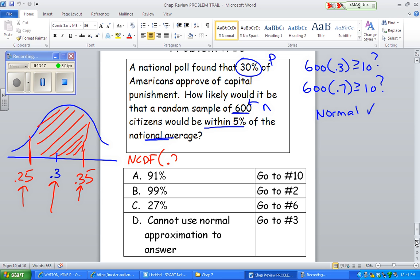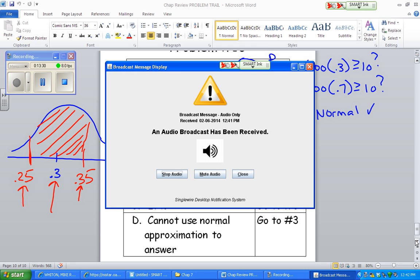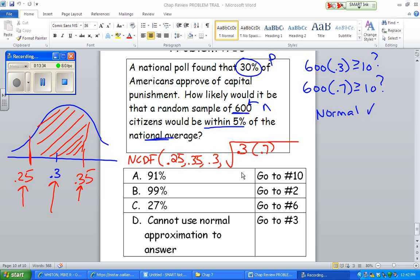Okay, and I want the area between 0.25 and 0.35. Okay, if the mean is 0.3. And again, standard deviation formula, we got to use P. P, 1 minus P, 1 minus P, all over N. What was that? 600. Okay, and that should get you right around 0.992, or 99%.